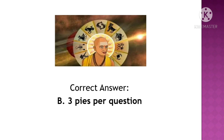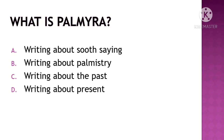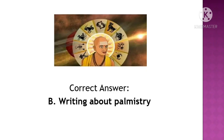Next question: What is Palmyra writing? The options are: A. Writing about soothsaying, B. Writing about palmistry, C. Writing about the past, D. Writing about the present. The correct option is Option B, writing about palmistry.